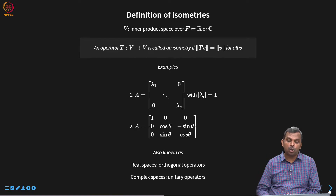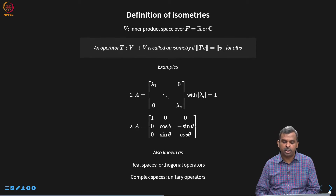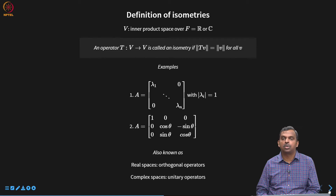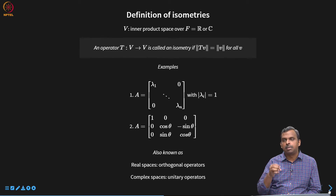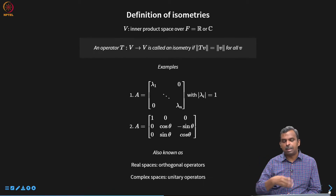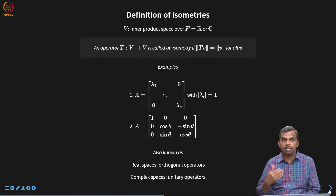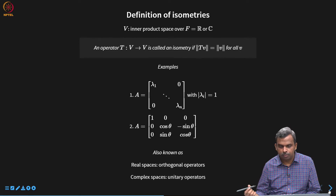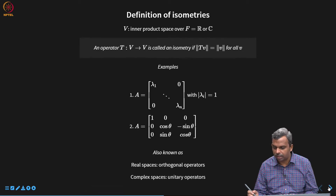Just as self-adjoint operators are called Hermitian in complex spaces and symmetric in real spaces, isometries have different names: in real spaces they are called orthogonal operators, and in complex spaces they are called unitary operators. This is the definition — the norm of the vector is preserved. Let us now see what the definition implies through various characterizations.